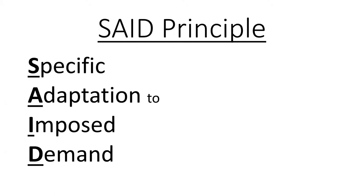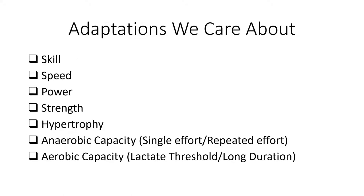We remember from our last section the specific adaptations to the imposed demands — our training program needs to be specific to the adaptations we want. But how do we know which adaptations we need? We have adaptations such as skill, speed, power, strength, hypertrophy, anaerobic capacities in the single effort and repeated effort, and aerobic capacity for lactate threshold or long duration endurance. We can combine and mix these based on time domains.